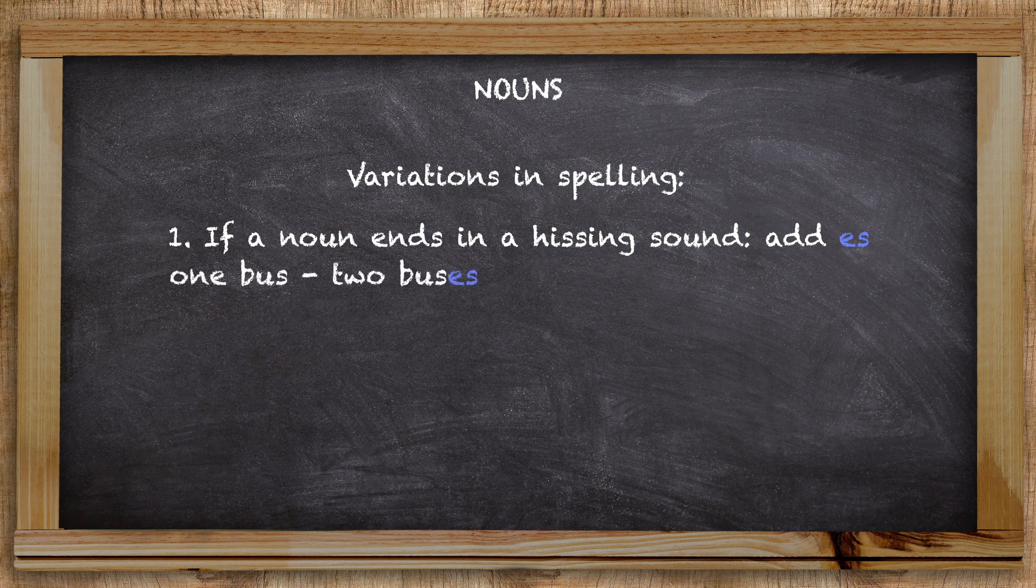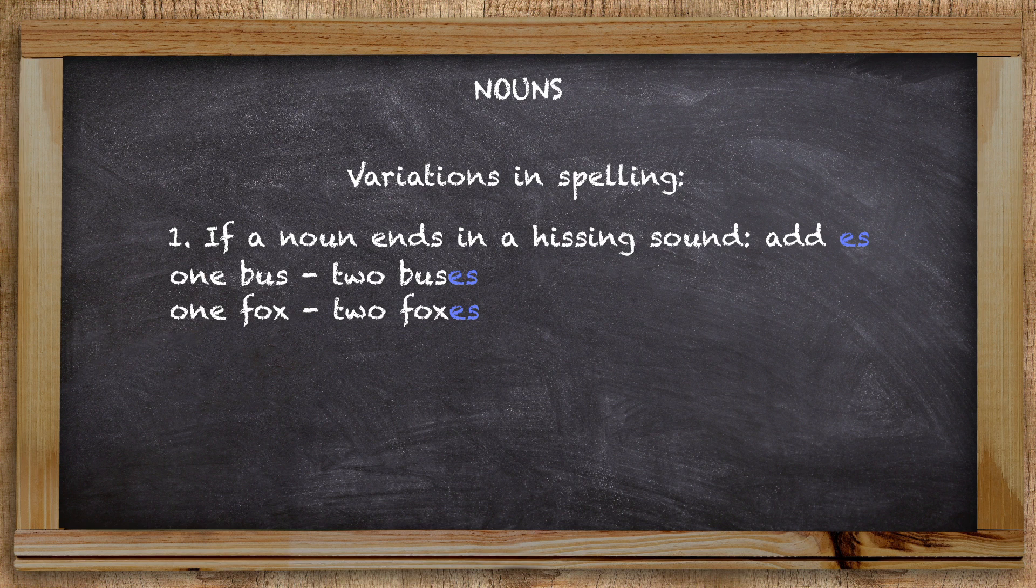So you would say one bus but two buses. Note that the s in buses doesn't double, a commonly made mistake. You would talk about one fox but two foxes, also with es added.